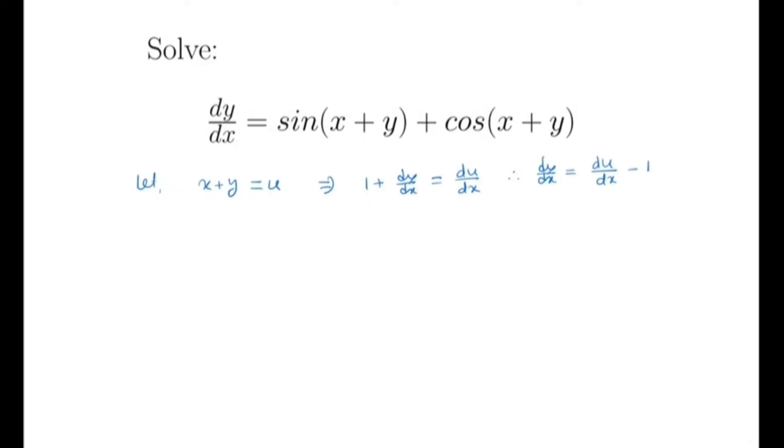Now we substitute dy/dx by du/dx minus 1. So du/dx minus 1 is equal to sin u plus cos u. So we have du/dx is equal to 1 plus sin u plus cos u. So we can write it as du by 1 plus sin u plus cos u is equal to dx.